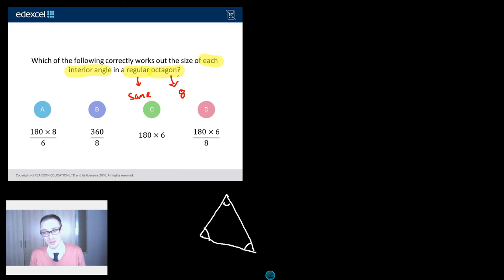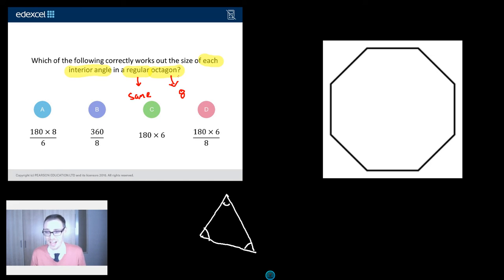Now, regular viewers will know I cannot draw for toffee. Fortunately, now I've practiced this in rehearsals, I reckon I can make a regular octagon magically appear. Three, two, one. Look at that. I'm happy with that. Right. So, there's my regular octagon.